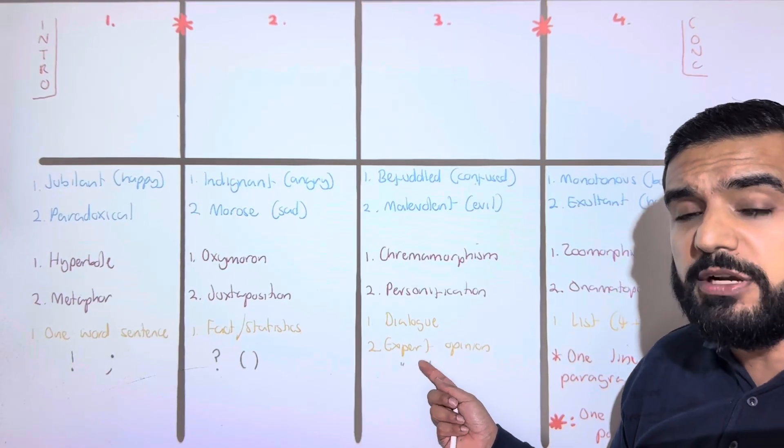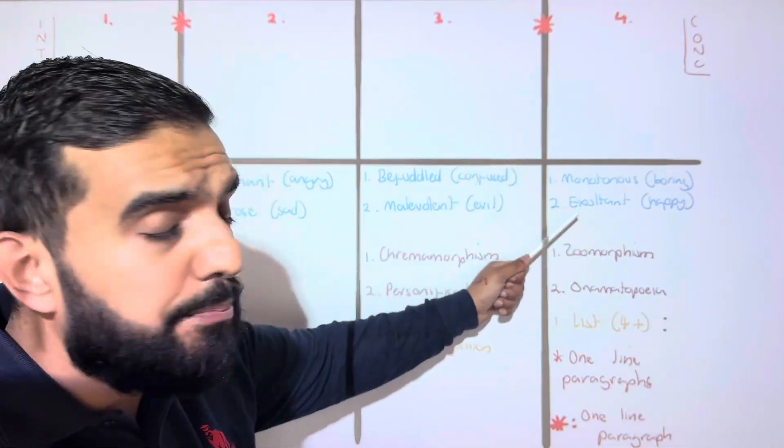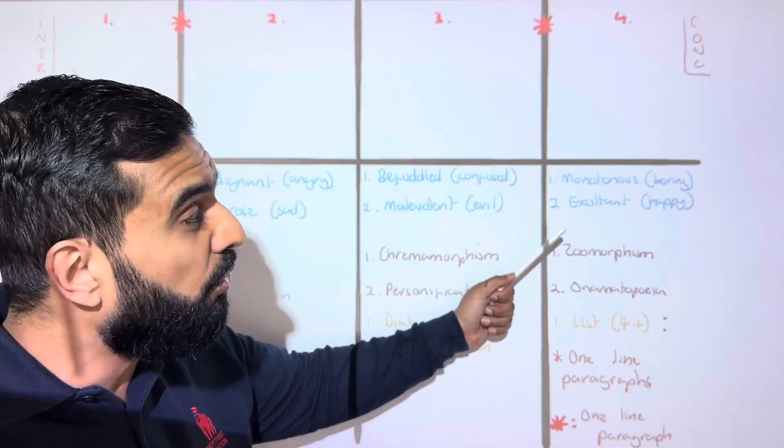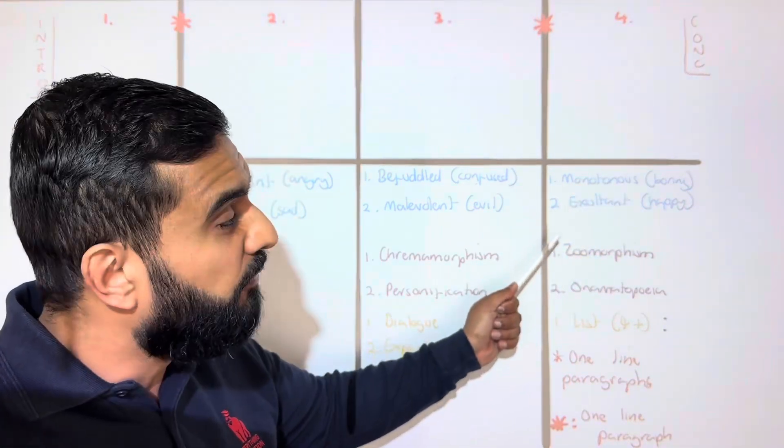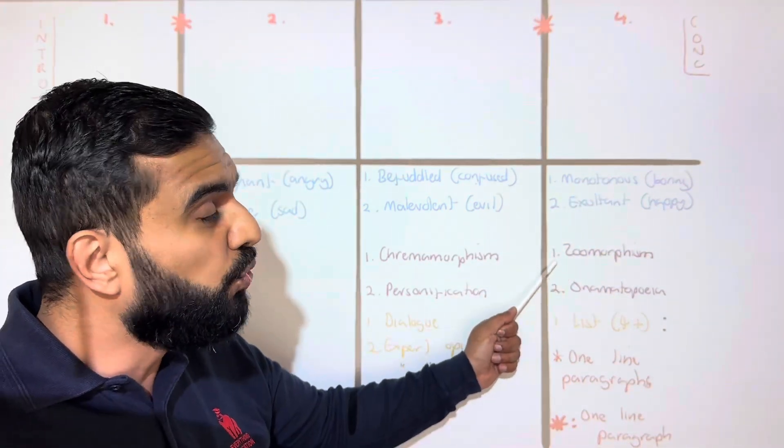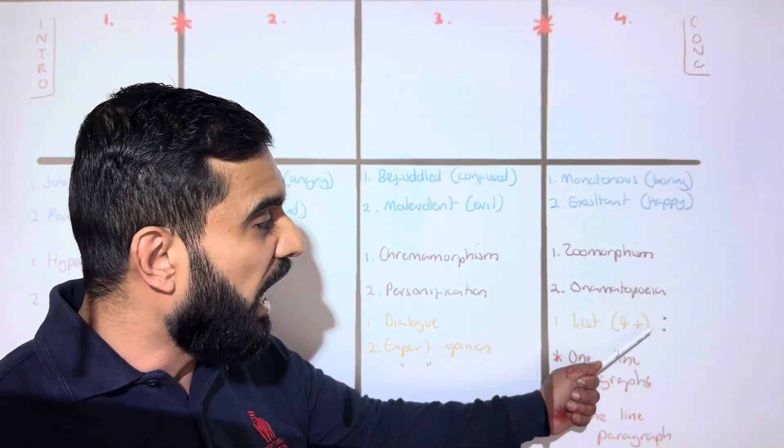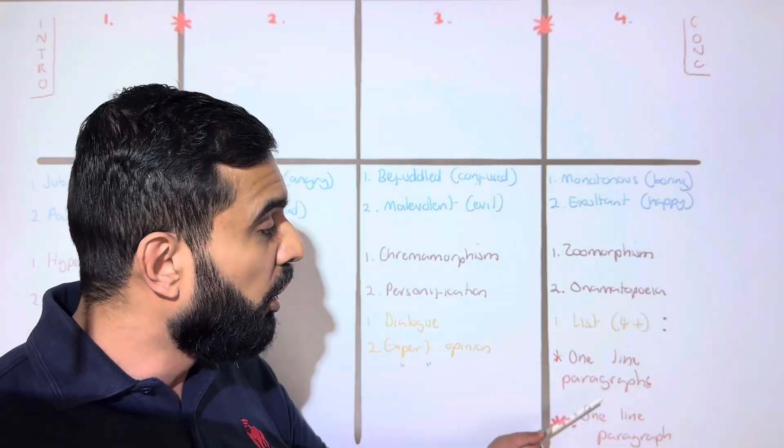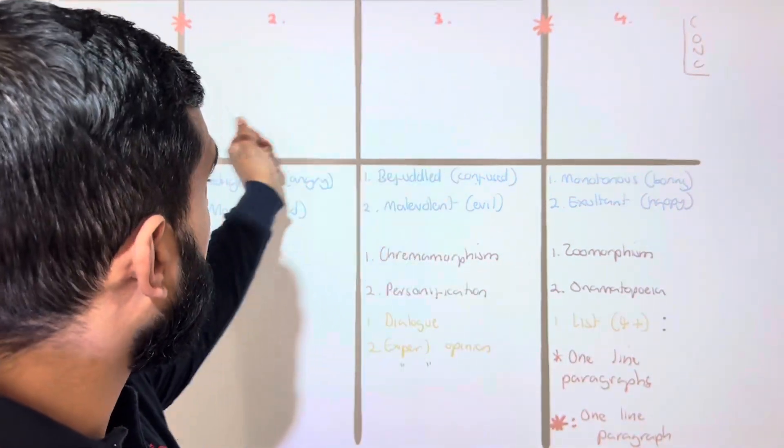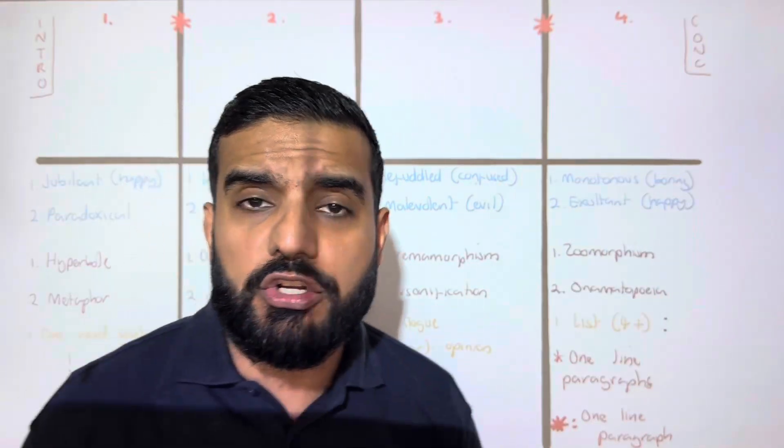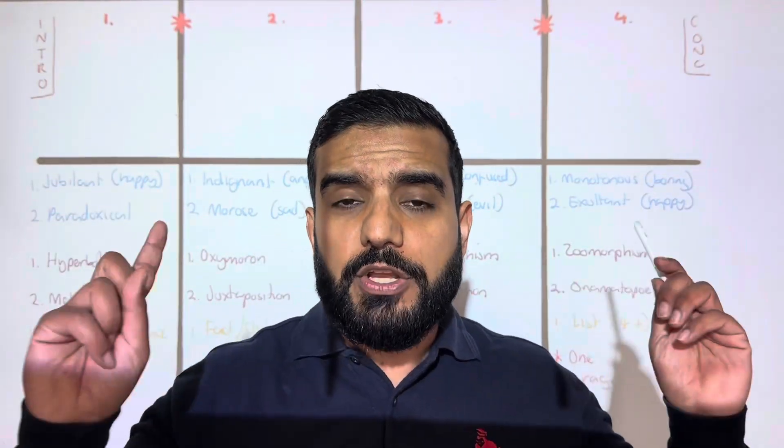Then we do a one-line paragraph. Then in our main paragraph four, for the word boring use monotonous; for the word happy use exultant. For language devices, use zoomorphism and onomatopoeia. Have a list of four, have a colon for punctuation, and that's it. This is my key for the one-line paragraph, and then you include a conclusion.